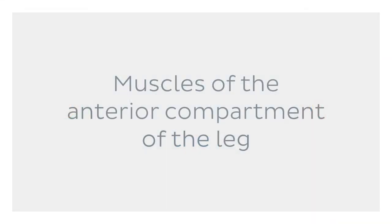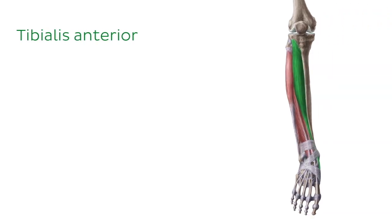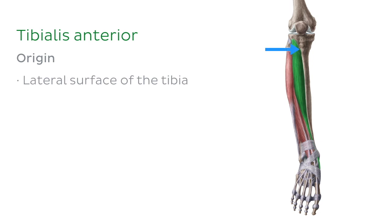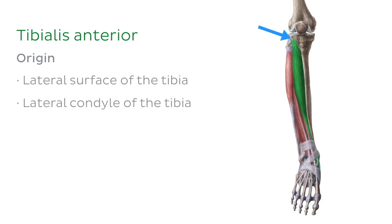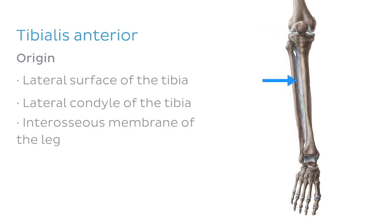The first muscle of the anterior compartment that we're going to be talking about today is the tibialis anterior muscle, and this muscle originates from the lateral surface of the tibia, the lateral condyle of the tibia, and the interosseous membrane of the leg.